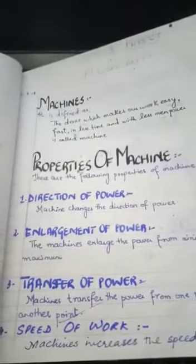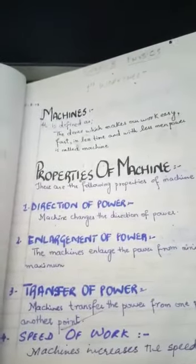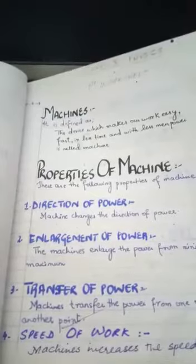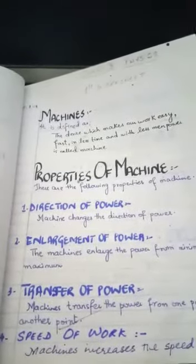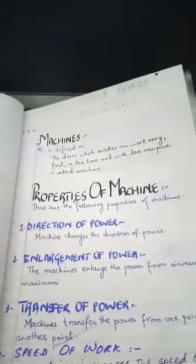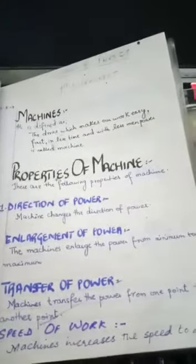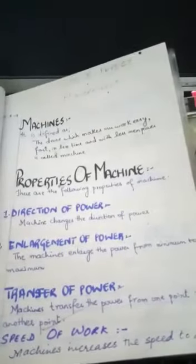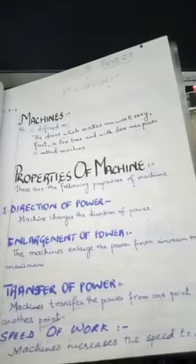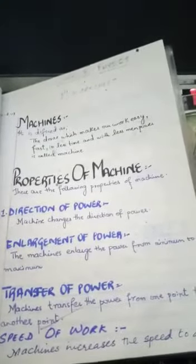For example, we can lift much heavier load by applying comparatively smaller force and overcome much greater resistance. Examples ki, aap is thara le sakte ho, ki we can lift heavy vehicle like truck, car with the help of screw jack, which is a simple machine, which enlarges the power of our hand.